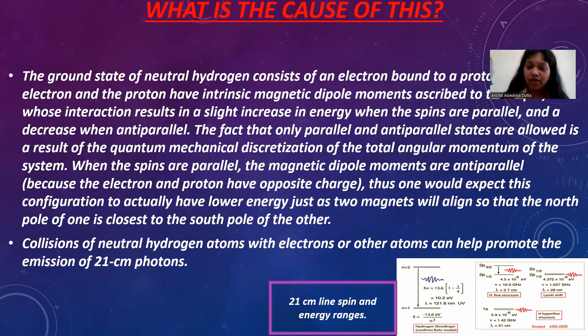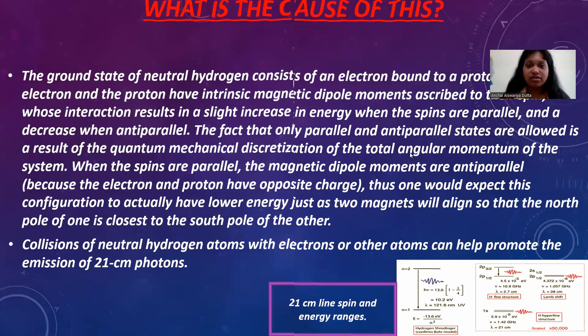This energy transition associated with the electron's spin flip corresponds to a very specific wavelength in the electromagnetic spectrum, which is approximately 21 centimeters, or you can say 21.106114054112 centimeter to be precise. You don't need to remember this long value, but now you could be sure that why it is called 21 centimeter.